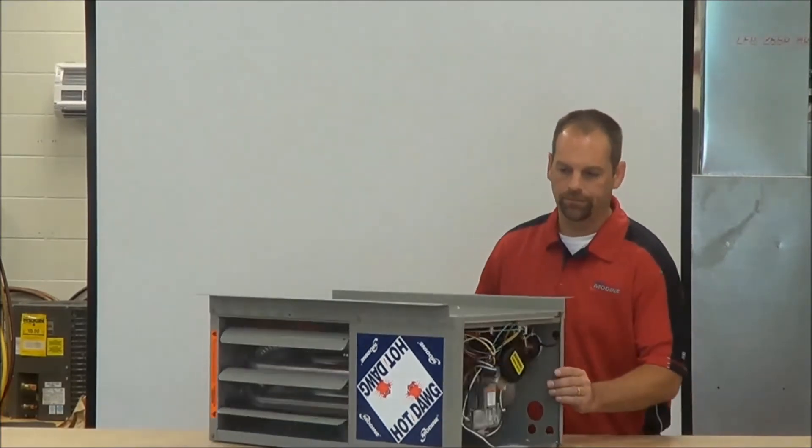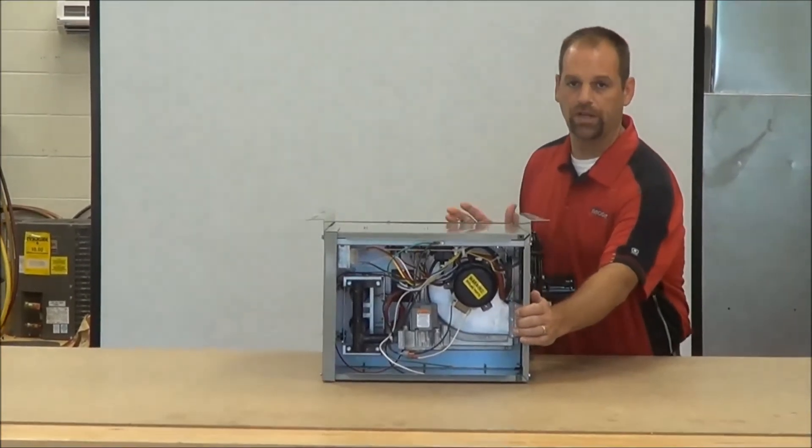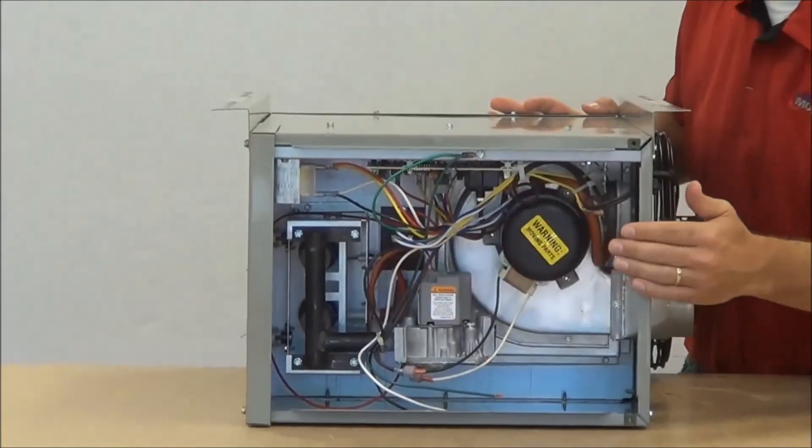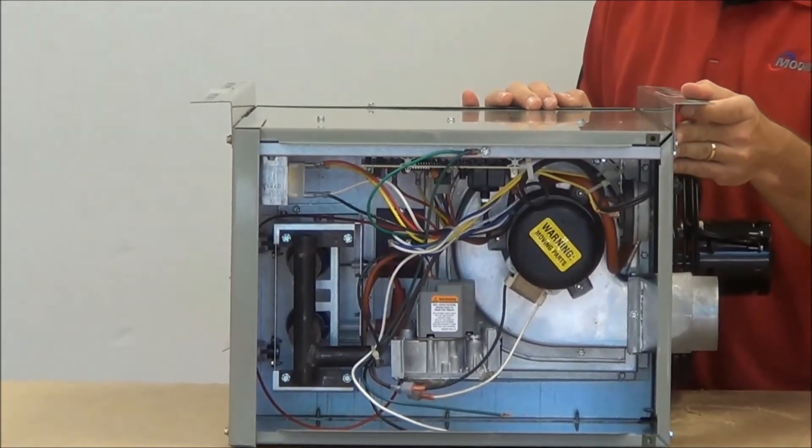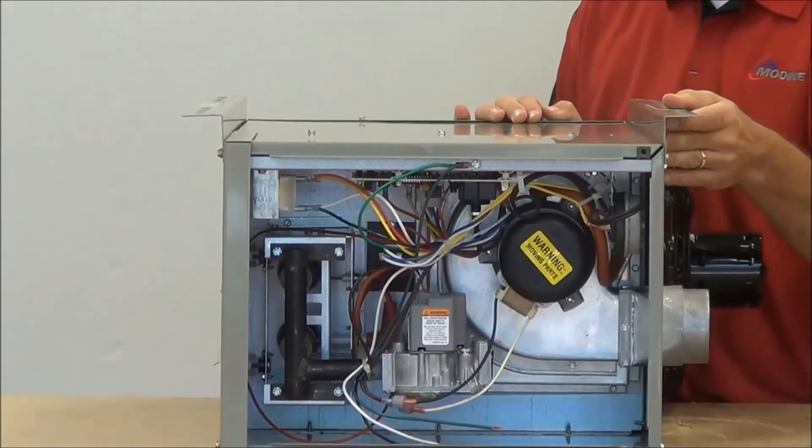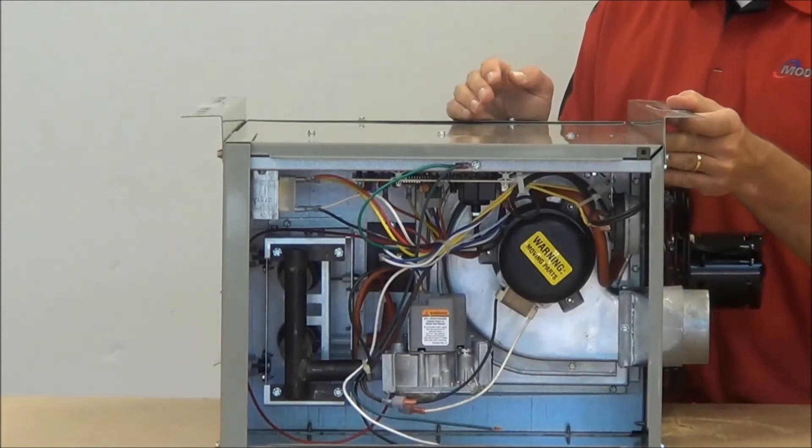This hot dog unit uses in-shot burners which are pretty common now in the industry, located over on this side here. On this little guy here we only have two in-shot burners and what happens is the gas flows through each burner and it carries over and it lights the next one and so forth as it travels through the burners.